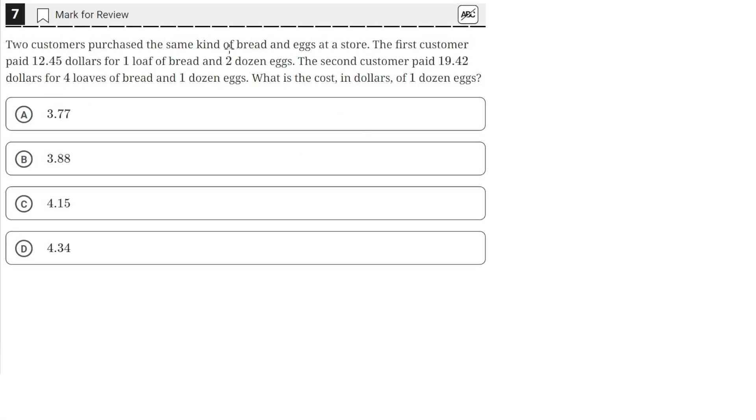Two customers purchased the same kind of bread and eggs at a store. The first customer paid $12.45 for one loaf of bread and two dozen eggs. The second customer paid $19.42 for four loaves of bread and one dozen eggs. What is the cost in dollars of one dozen eggs?